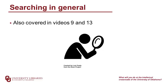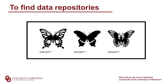Before we get into specific data sources for departments, we're going to talk a little bit about searching in general for data. We talked about searching in general in videos 9, spatial dataset searching, and video 13, literature searching. So the strategies are going to be similar. To find data repositories — the equivalent of finding a database — you want to start really broad with big categories, because most repositories are going to hold different kinds of data.